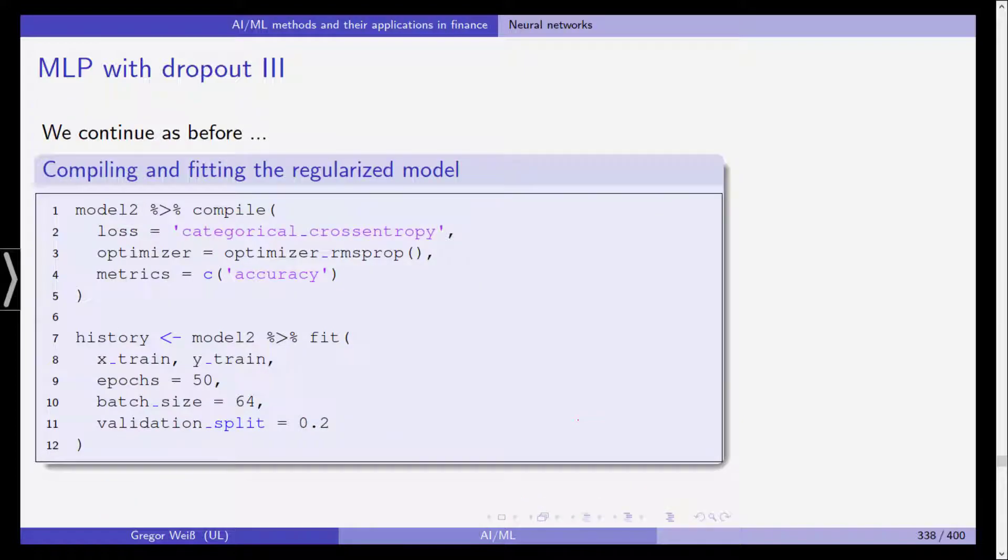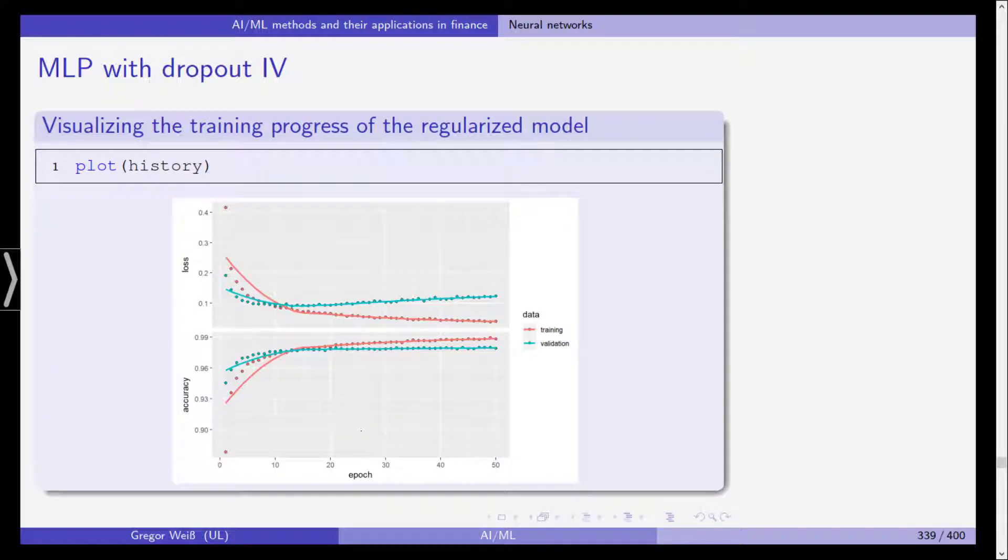We compile this and fit the regularized model. We are using cross entropy as a loss function, same optimizer as before, and to assess the accuracy we use the accuracy metric. We fit the model x train y train 50 epochs batch size is 64 and the validation split is again 20% of our observations and this is the result.